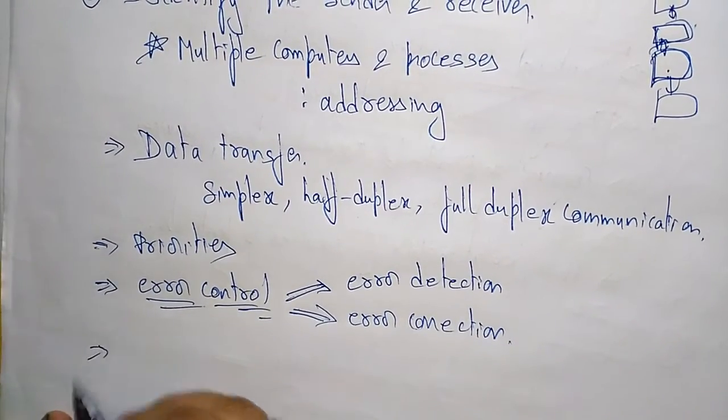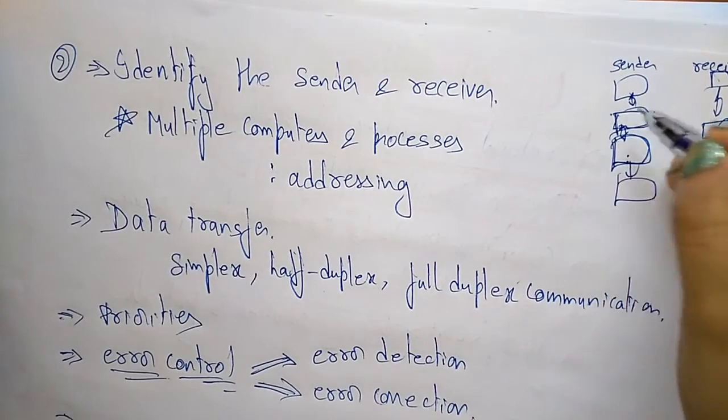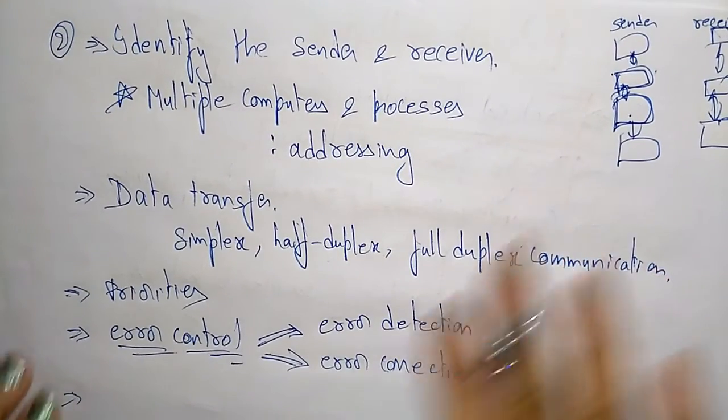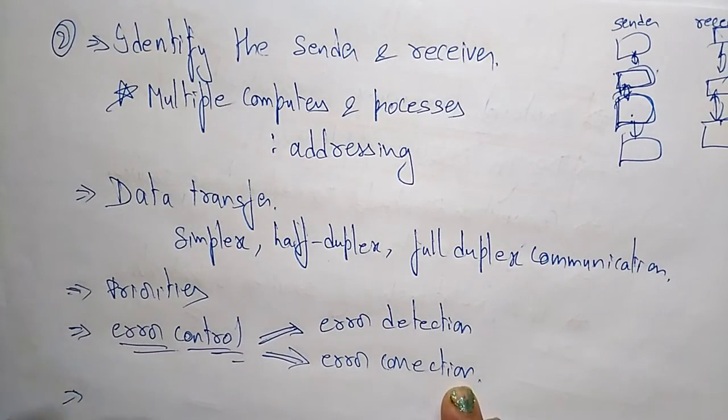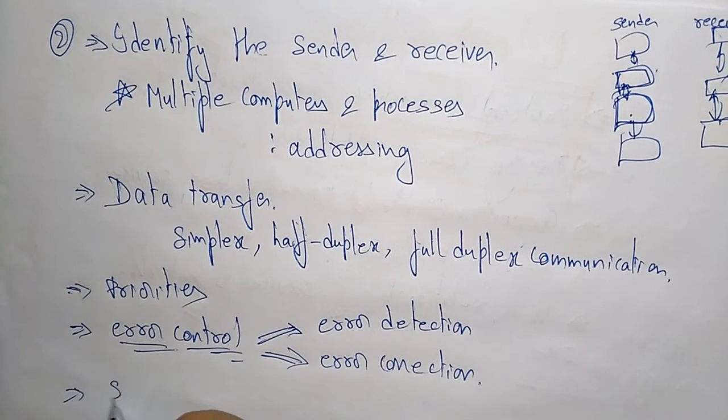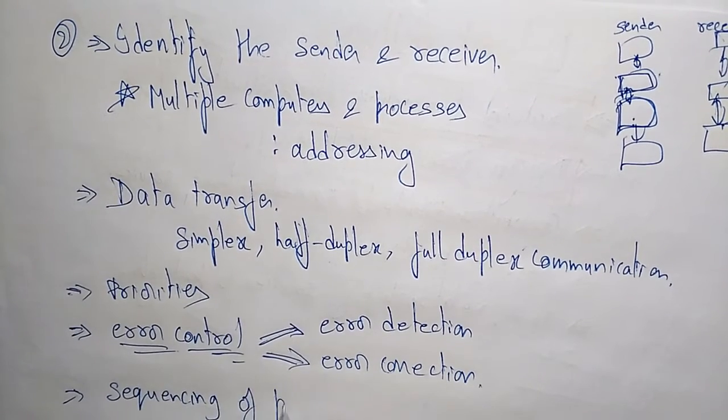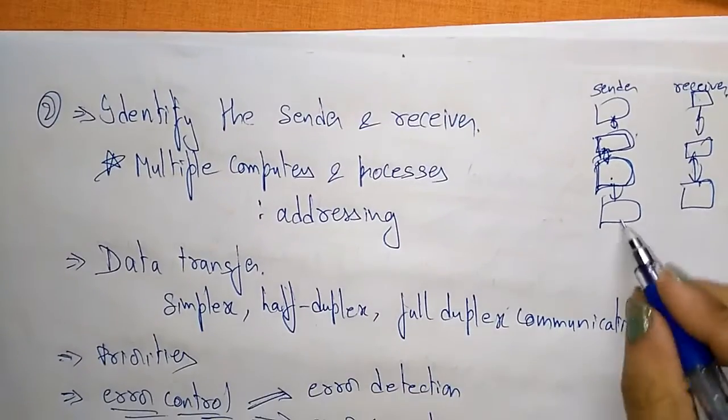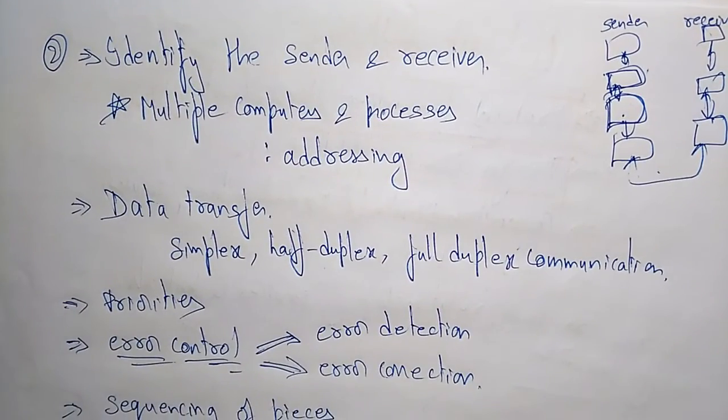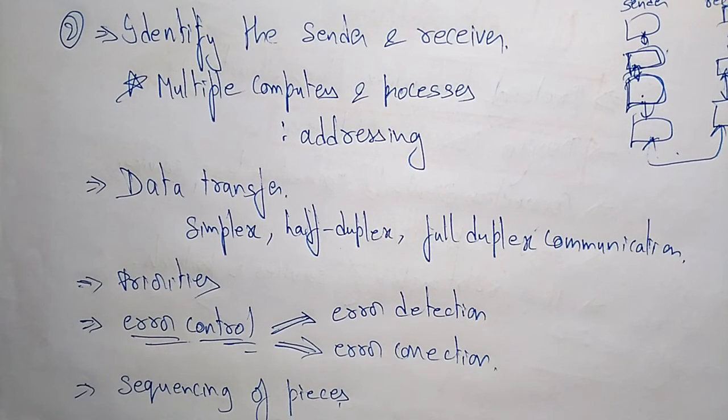Next, I already identified the sender and receiver, transferred the data using any one of the communication technologies, selected the priorities, and checked for errors. And next, I have to pass the sequencing of pieces. The data has to be transferred from sender to receiver. So this is identifying the sender and receiver in the network software. Thank you.